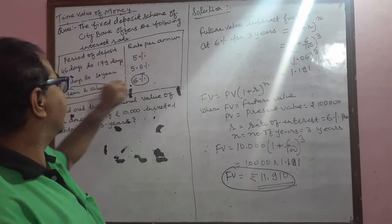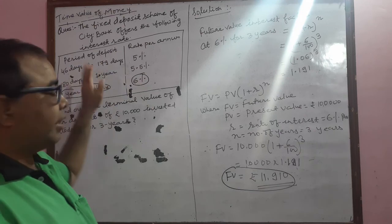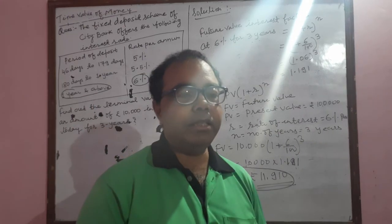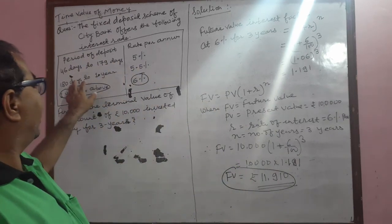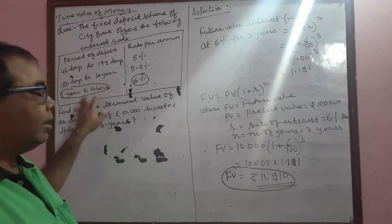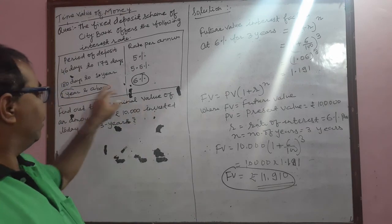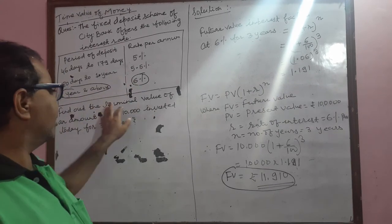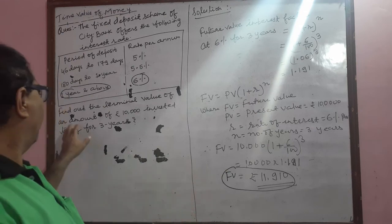The period of deposit and the rate of interest per annum: 46 days to 139 days is 5%, 140 days to one year you will get 5.5%, and one year and above you will get 6%. Find out the terminal value or the future value of the amount invested.